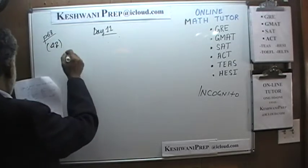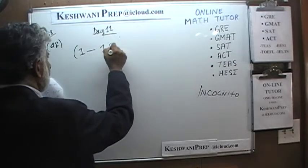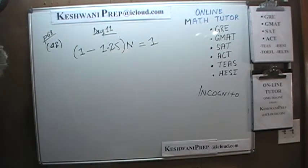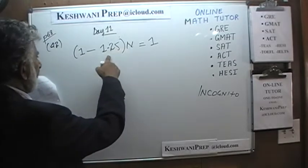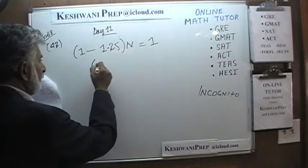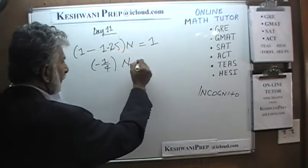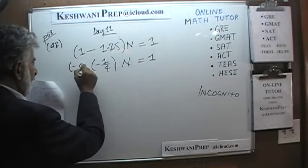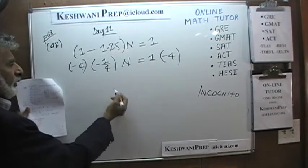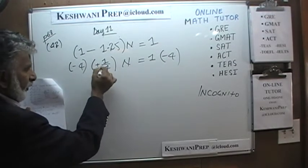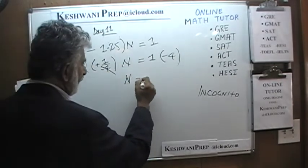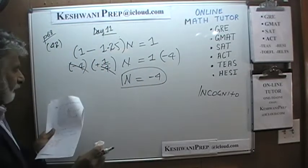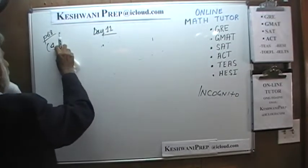Number 42. We are given: 1 minus 1.25 times n equals 1. Now, 1 minus 1.25 is negative 0.25, which is just negative one quarter. So negative one quarter times n equals 1. Multiplying both sides by negative 4, the negative quarters cancel out, and we get n equals negative 4.